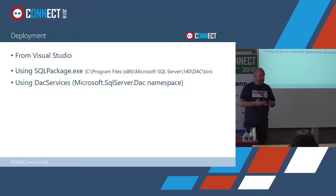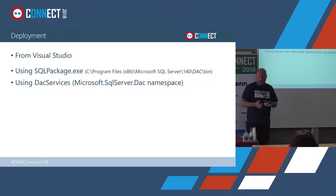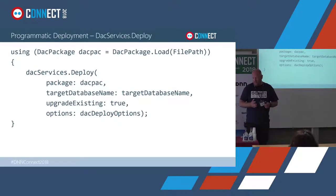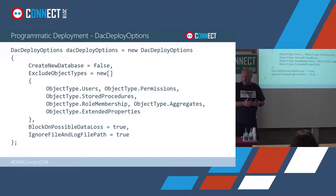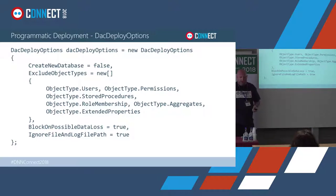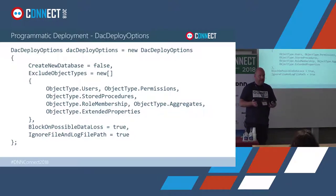You could use DacServices for that — it's a namespace that is available. You can build your own installation logic to install dacpacks from within DNN. And doing that, it would look something like this: you load the file, deploy it with some parameters, and the biggest item here is the options object. You can define whether or not you want to create a new database, exclude object types you never want deployed, and configure other deployment settings. Technically it's trivial to build support for this into DNN.